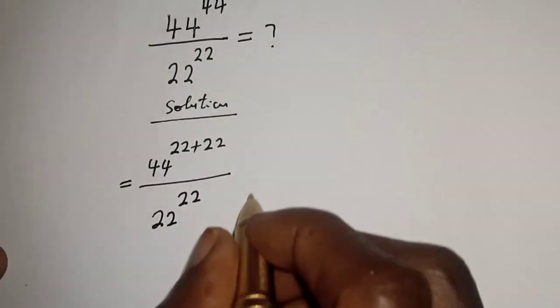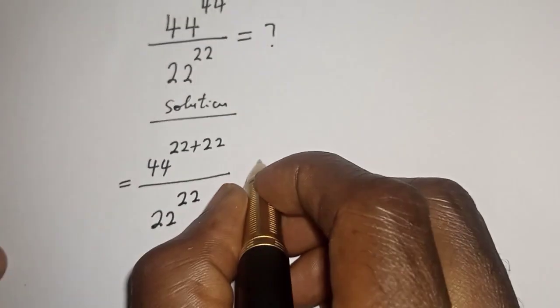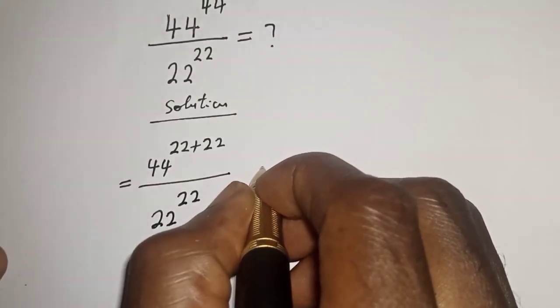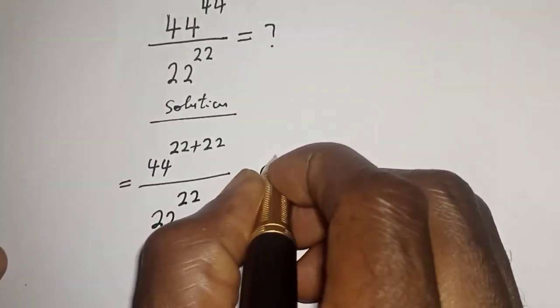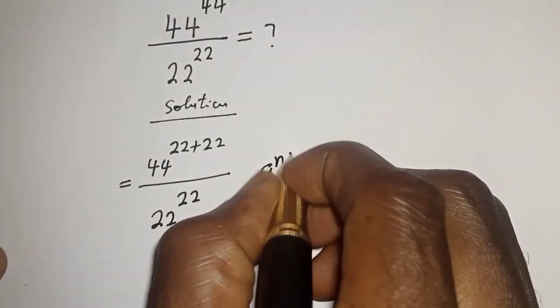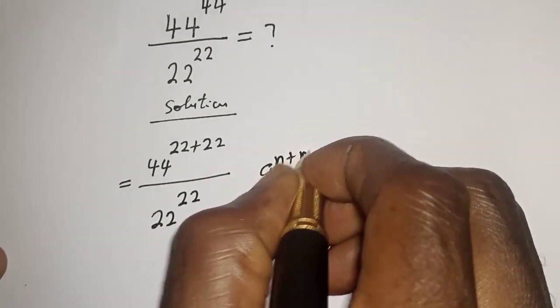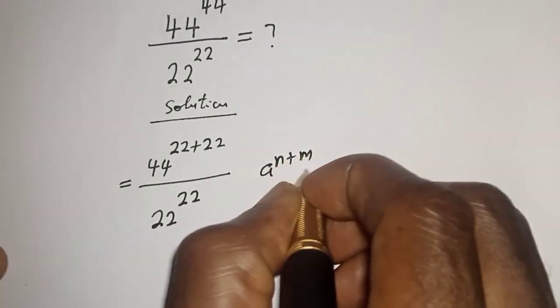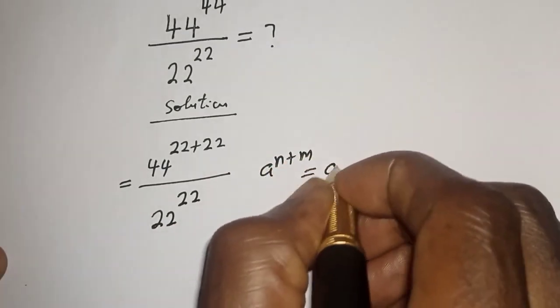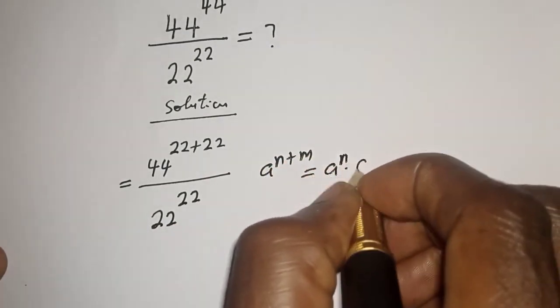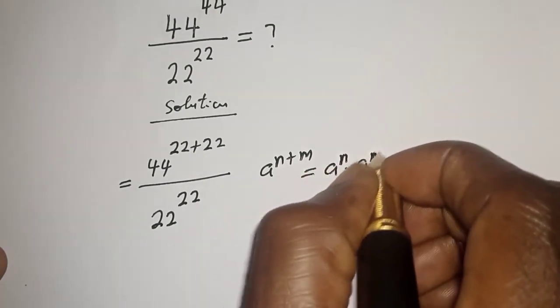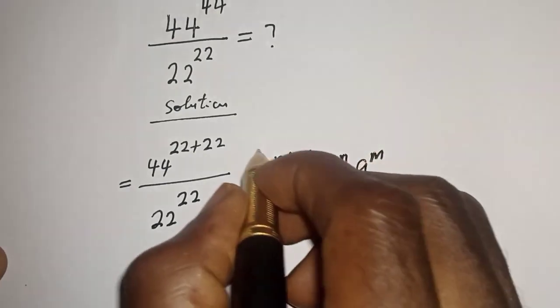Take note of this exponential rule: a raised to power n plus m is equal to a raised to power n multiplied by a raised to power m.